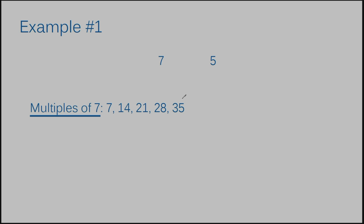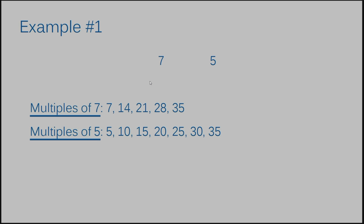Eventually you're just going to have to stop, because you could literally sit here all day and keep writing multiples. Then you need to list some multiples of your second number, which is five. Starting with five, we add that to itself: 10, 15, 20, 25, 30, 35.